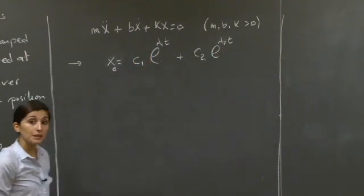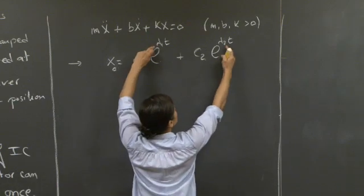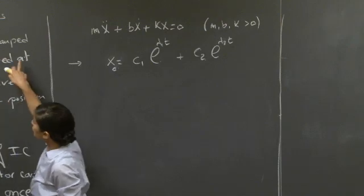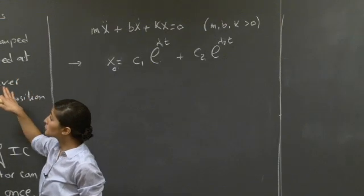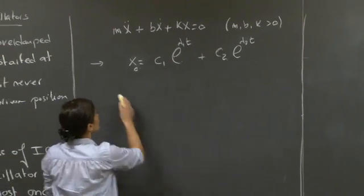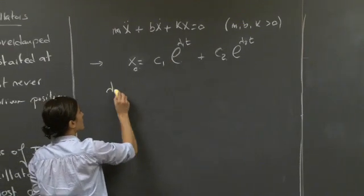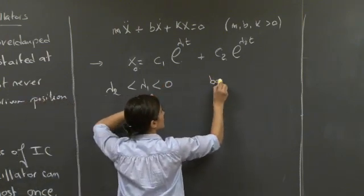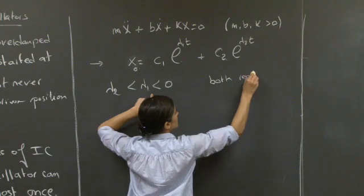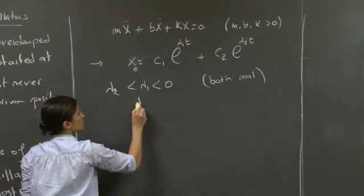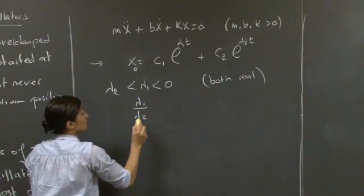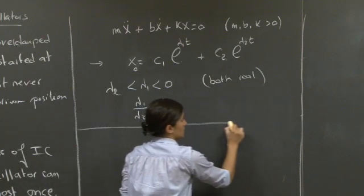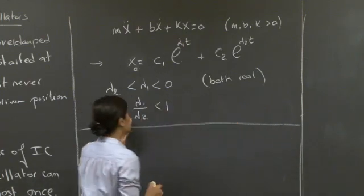Lambda-1 and lambda-2 are the roots of the characteristic polynomial. Given that we're looking at an unforced overdamped spring-mass-dashpot, we can show that lambda-1 and lambda-2 are both real and negative — specifically both less than 0 — and we'll use that fact later.